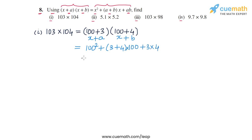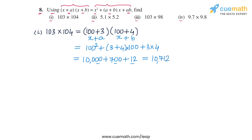So 100² = 10,000, then 3 + 4 = 7, and 7 × 100 = 700, and then 3 × 4 = 12. So we get 10,000 + 700 + 12 = 10,712. This is the value of the first product.